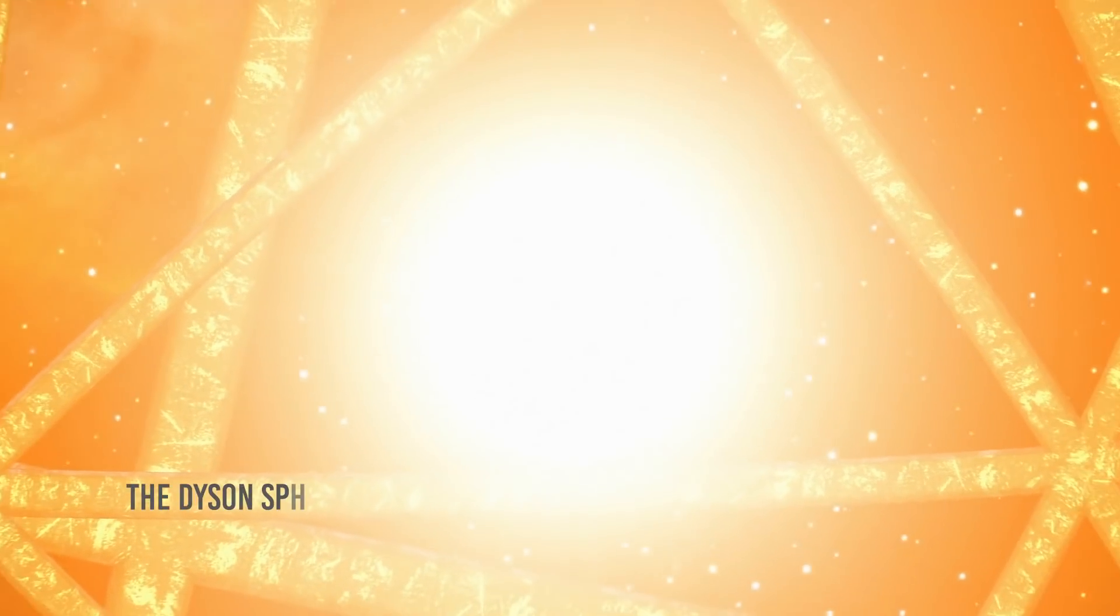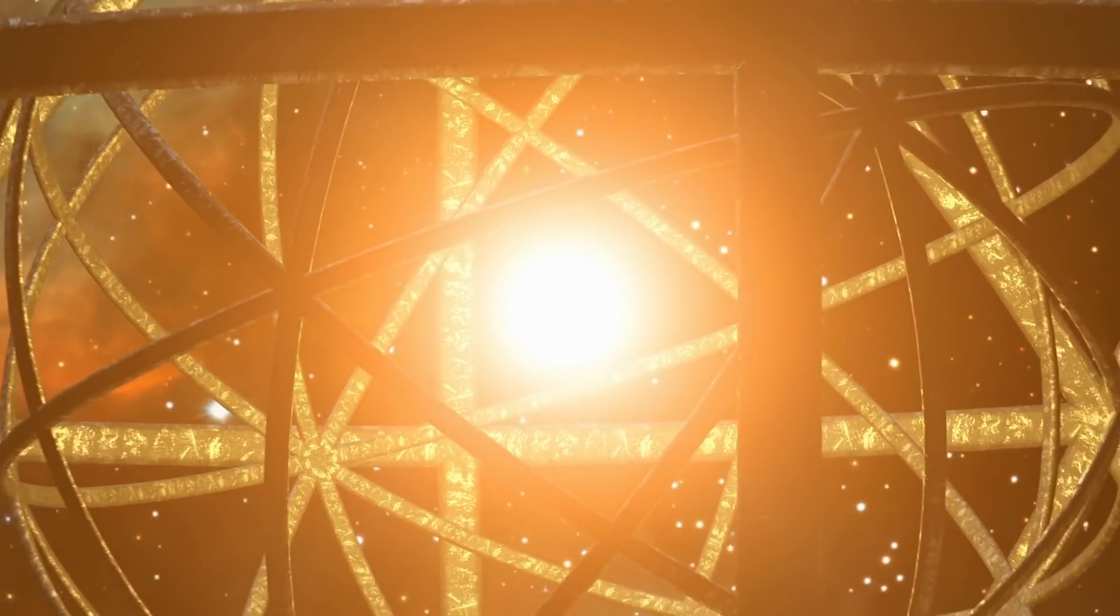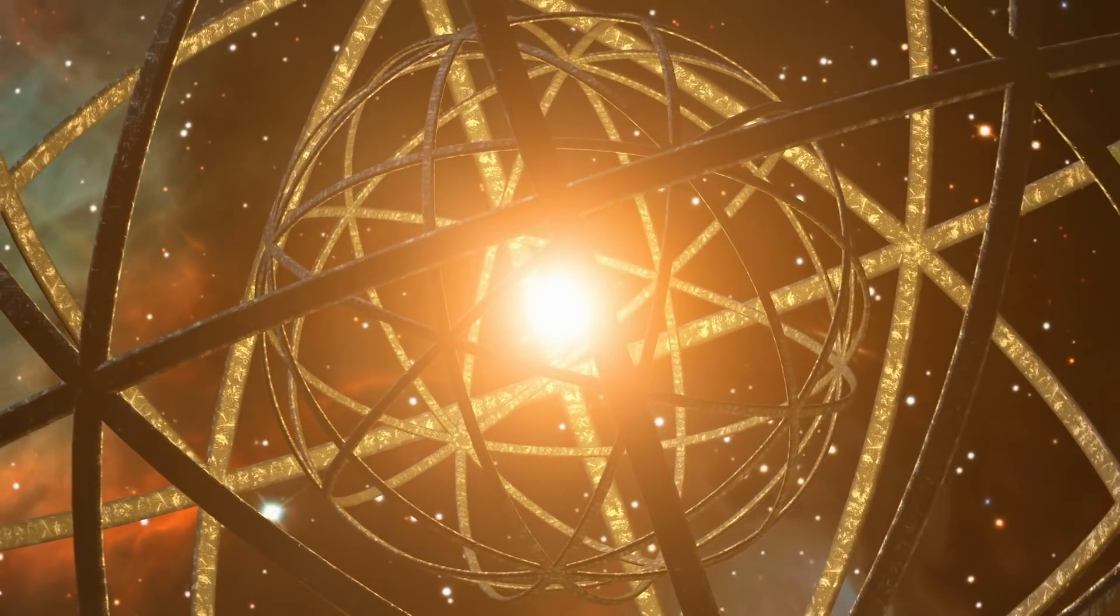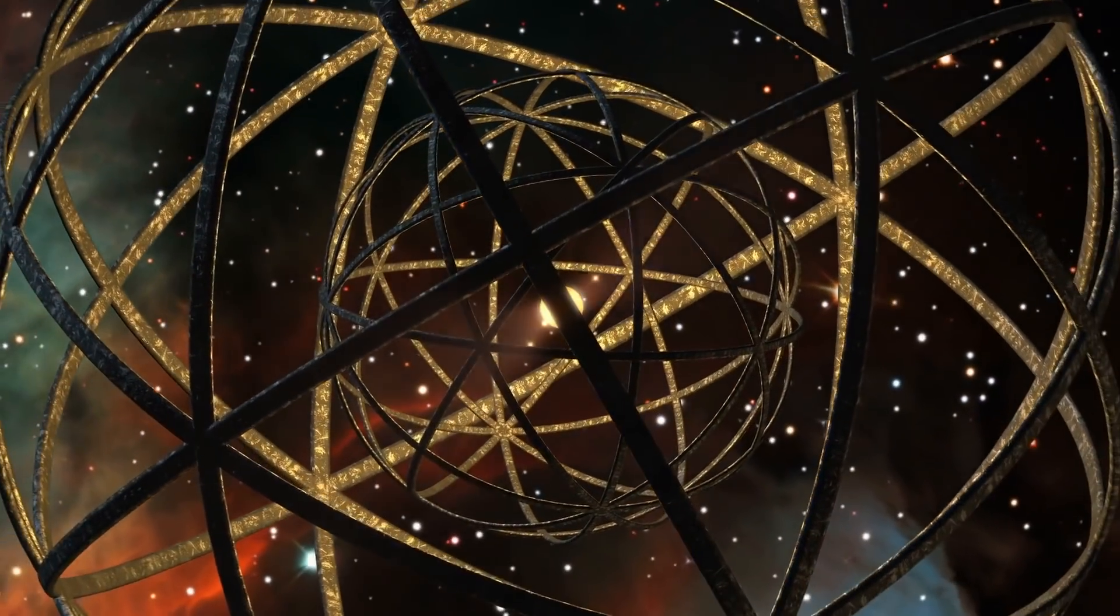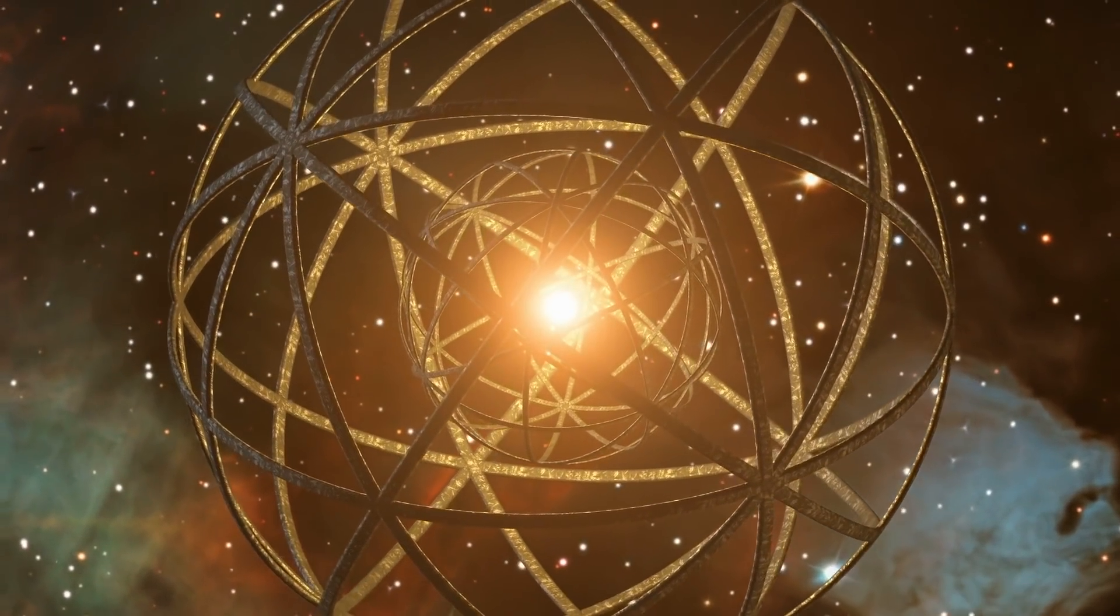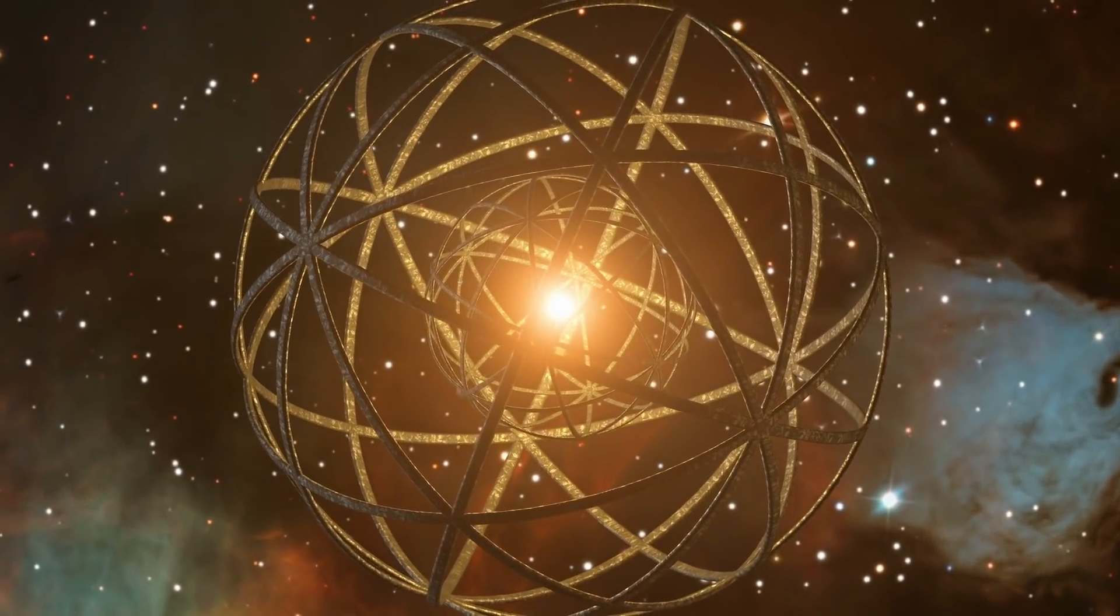One way to harness the energy of the star is to build a megastructure around it called the Dyson Sphere. It would completely enclose a star and capture all of its energy, then be able to transfer the energy for use by the home planet. Of course, this kind of contraption would dwarf the Death Star of the Star Wars universe, requiring amazing technology to build and could take different forms.